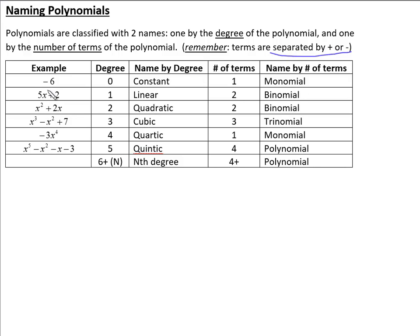In our second example we have a linear — the highest degree here is x to the first, and that's a degree one polynomial, which we call linear, because when we graph them they're all equations of lines, like y equals mx plus b. This one happens to have two terms — 5x and 2 separated by addition — that's called a binomial. Bi of course means two, nomial means terms.